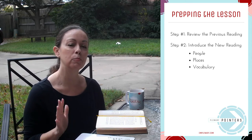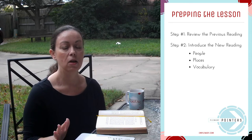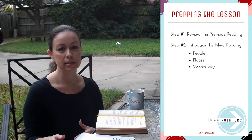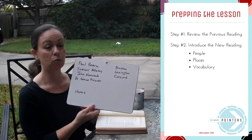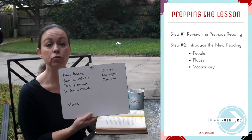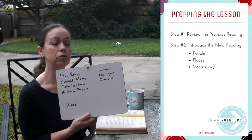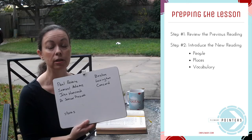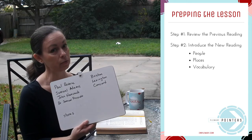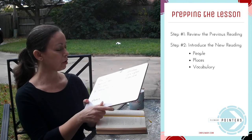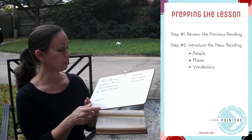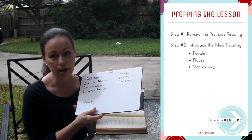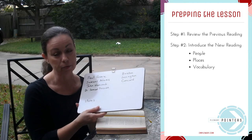Here's another tip for prepping the lesson: all of those proper names and places, you can always write them down on a whiteboard for your student to refer to during her narration. It's very, very helpful. That way they can refer to all the proper names and they don't have to remember everybody's name from the reading.